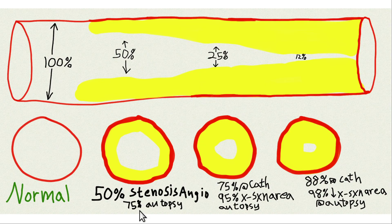Cardiac cath is the same thing as coronary artery angiogram, coronary angiogram, or coronary arteriogram — they're all the same thing. There are different ways of looking at the amount of coronary artery stenosis: you can do it with IVUS (intravascular ultrasound), which is rarely done, or with CT angiogram, which is becoming more common. But the most common methods for this paper are cardiac cath and autopsy.